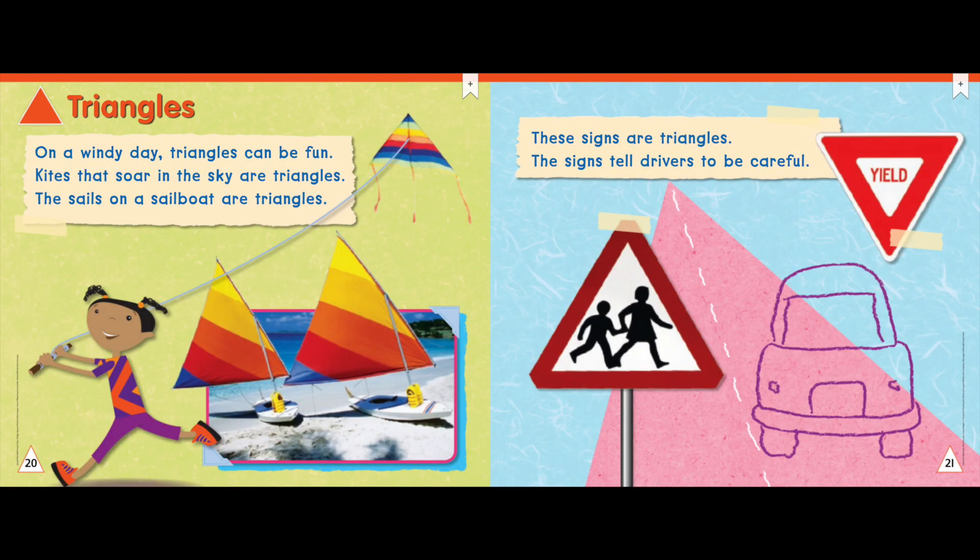On a windy day, triangles can be fun. Kites that soar in the sky are triangles. The sails on a sailboat are triangles. These signs are triangles. The signs tell drivers to be careful.